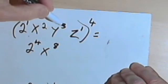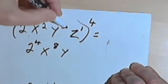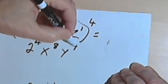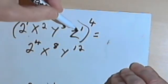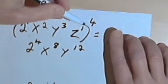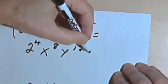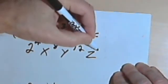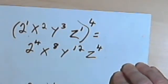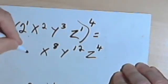y to the third raised to the fourth power is y to the 3 times 4, which is 12, and z to the first raised to the fourth power is z to the 1 times 4, which is 4. And again, you don't want to leave this 2 to the fourth like it is, you want to change that into 16.